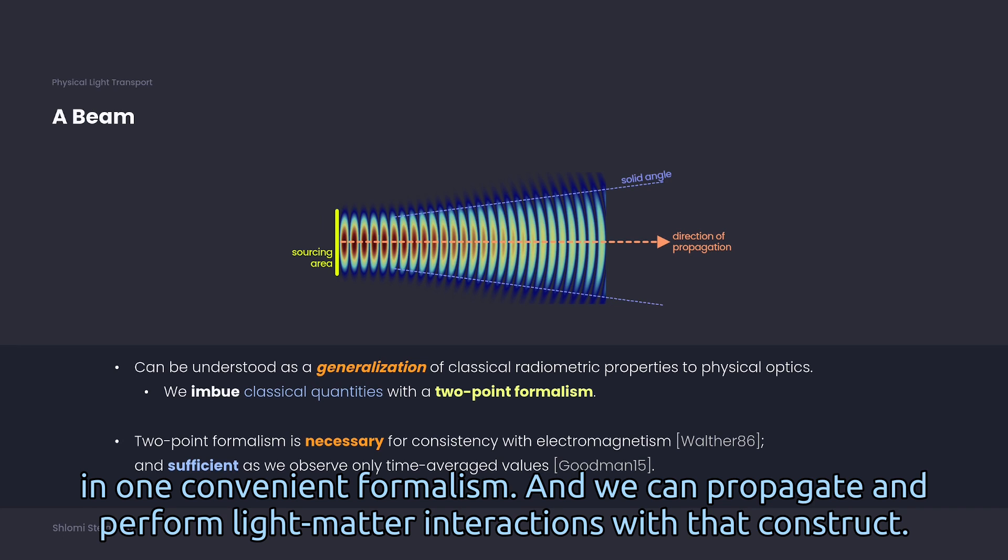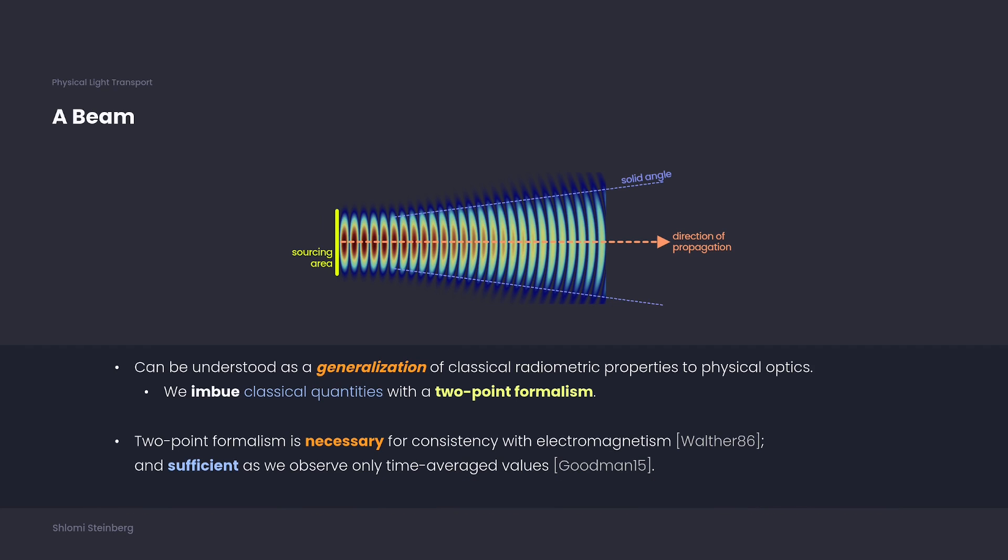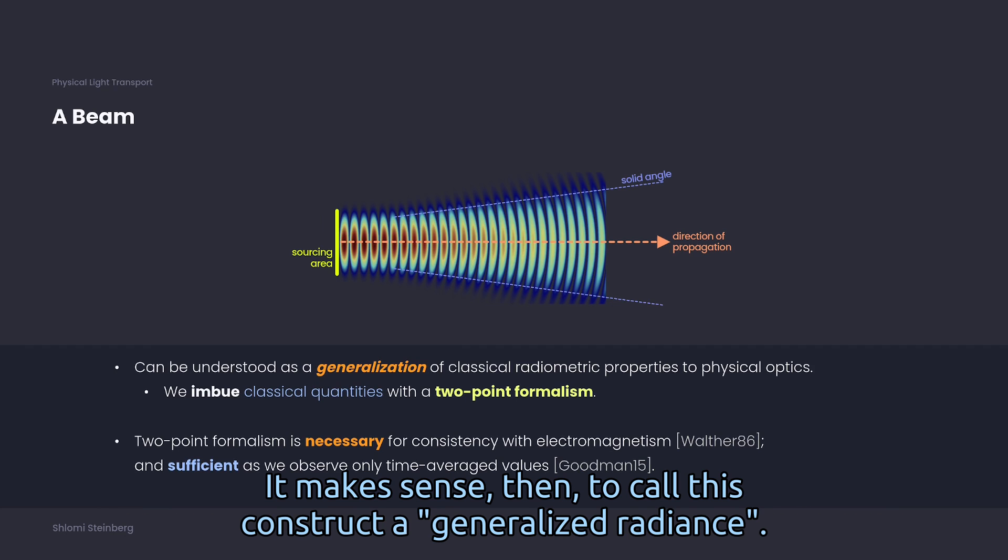And we can propagate and perform light-matter interactions with that construct. It makes sense, then, to call this construct a generalized radiance.